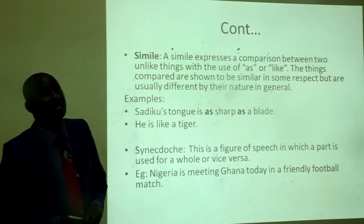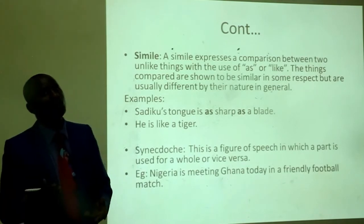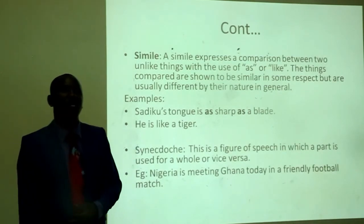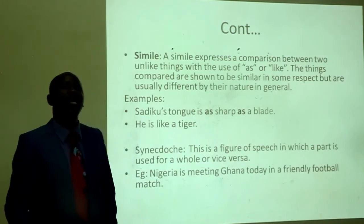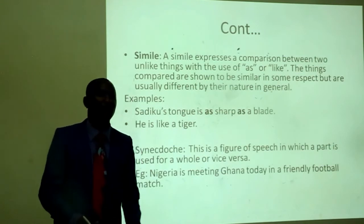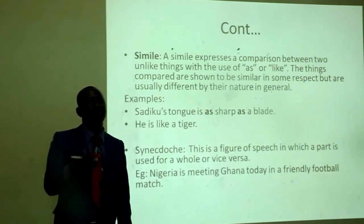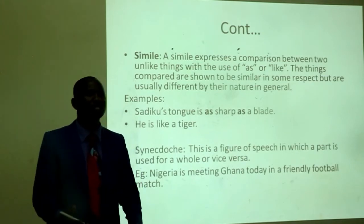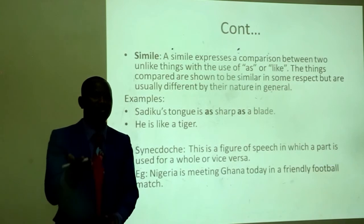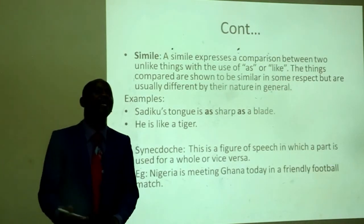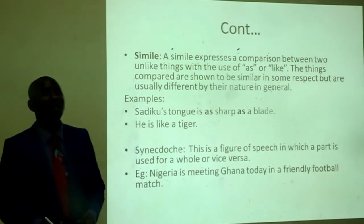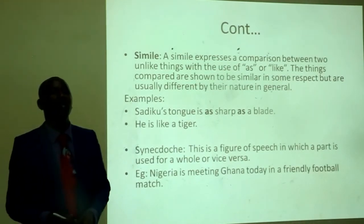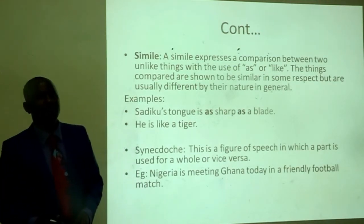Let us look at simile. A simile expresses a comparison between two unlike things with the use of 'as' or 'like'. The things compared are shown to be similar in some respect, but are usually different by their nature in general. For example, 'Sadiku's tongue is as sharp as a blade' — Sadiku's tongue is compared with a sharp blade. 'He is like a tiger' — the behavior of the person is compared to that of a tiger, with the use of 'like'. Those are examples of similes.